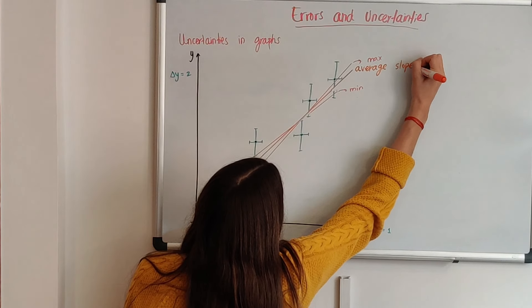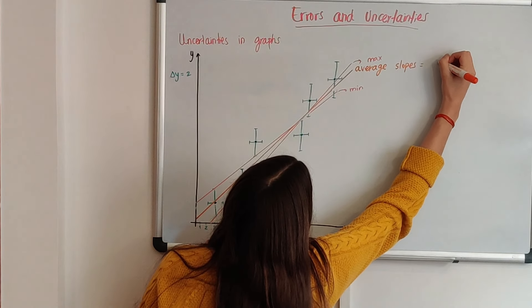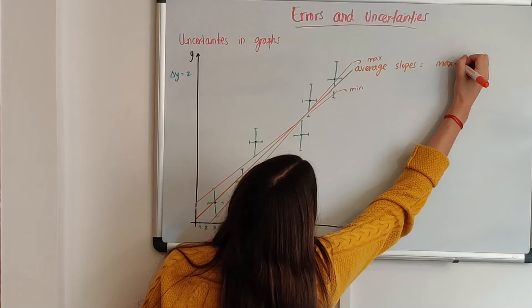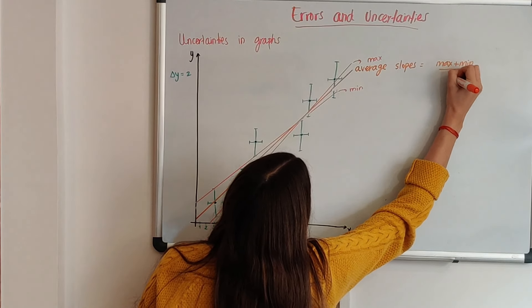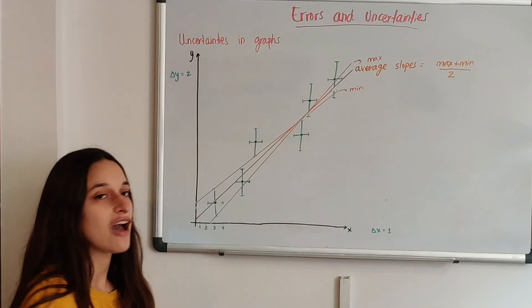So how do you know? Well, it should have the average of the slopes. That means that you add the maximum slope and the minimum slope and you divide by 2. That is going to give you the average slope.